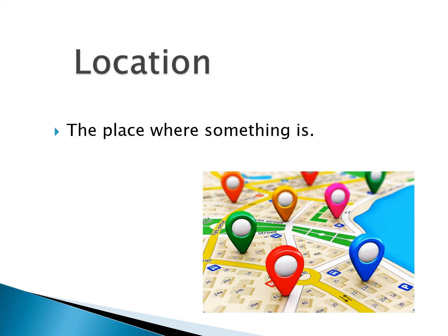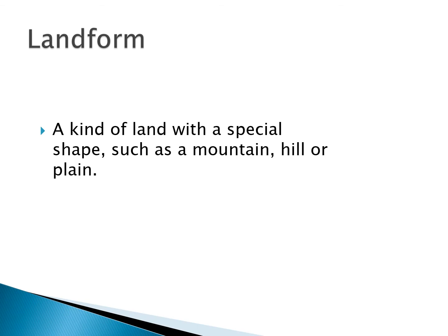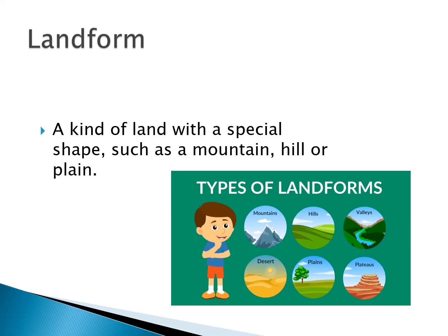Let's move on to the next vocabulary word: landform. What is a landform? A landform is a kind of land with a special shape, such as a mountain, hill, or a plain. I will show you pictures of the different kinds of landforms you will learn about in social studies. Take a look at this. I want you to know — and I'm sure most of you already know — the landform of Qatar is a desert.